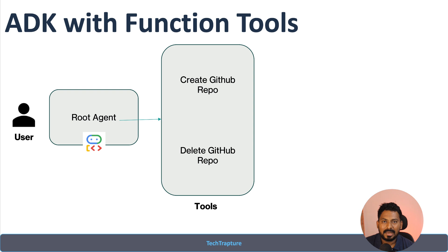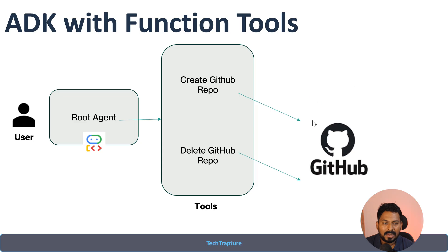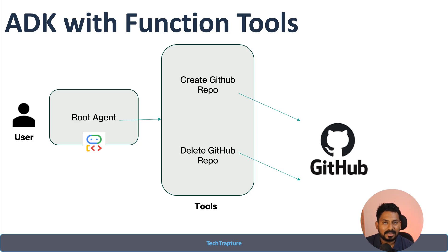If the user asks about deleting a GitHub repository, the agent will ask for the required parameters. Based on the given parameters, it will invoke the GitHub APIs to either create or delete the repository — all without going to the GitHub console. The agent will directly create or delete a GitHub repository for you.